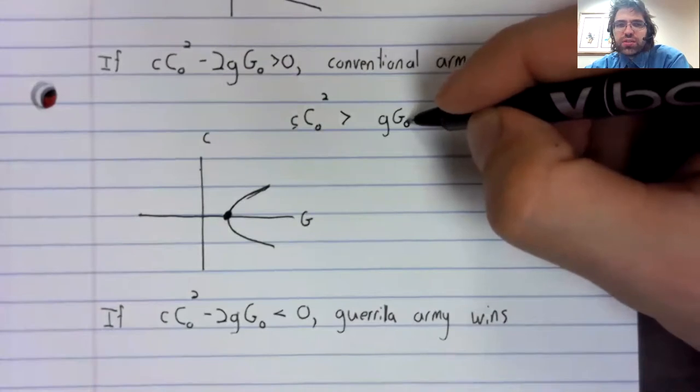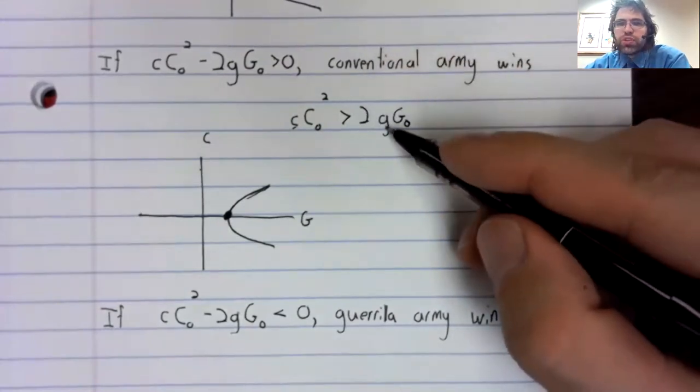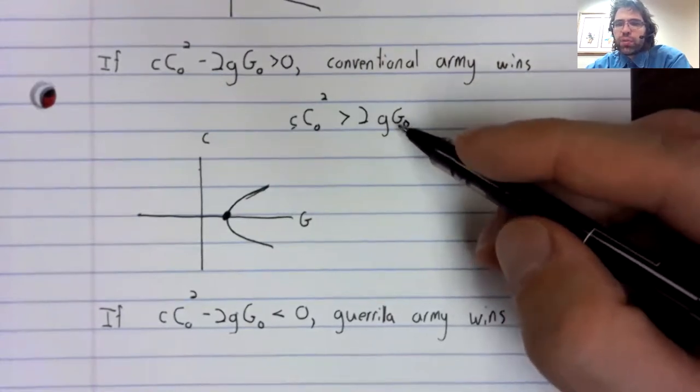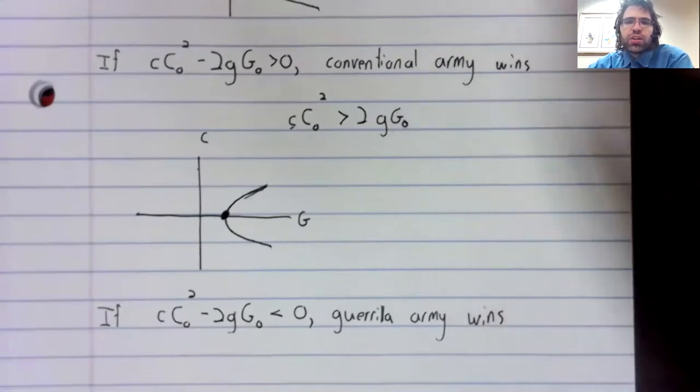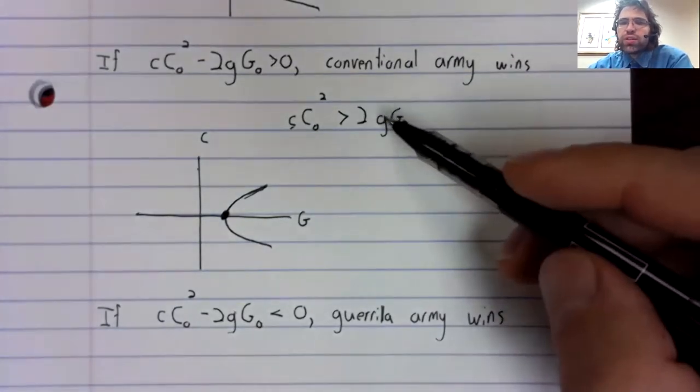G sub zero is a measure of the strength of the guerrilla army. But unlike the previous case, this is harder to interpret.